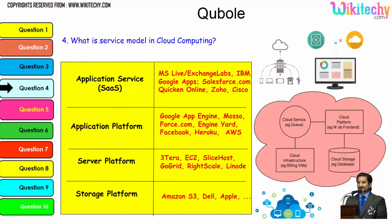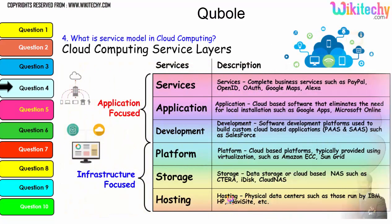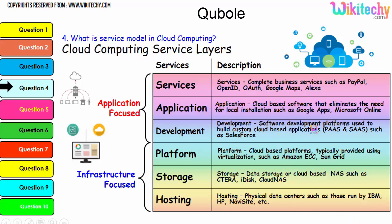Digging further into the service model, typical examples of service layers include: application service, application platform, server platform, and storage platform — with storage provided by Amazon S3, Dell, and Apple. The important service layers are: services, application, development, platform, storage, and hosting. These are important services that will also be asked about in cloud computing interviews.